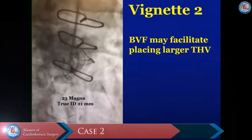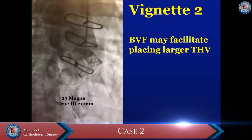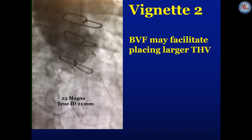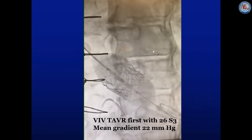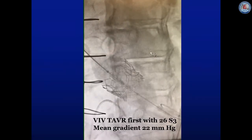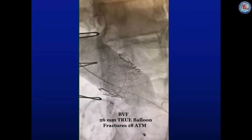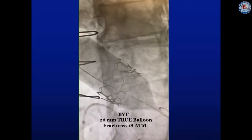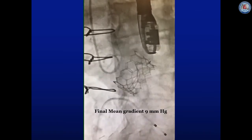Our second vignette illustrates how BVF may facilitate placing a more appropriately sized and optimally expanded transcatheter valve. Here is a 23 mm Magna with a true ID of 21 mm. The valve-in-valve app would recommend a 23 mm S3 or a 26 mm Evolute R. We selected a 26 mm S3, implanted at zero depth, with a mean gradient of 22 mmHg — in the PPM range. We then selected a 26 mm TRUE balloon, right-sized to the 26 mm S3, and performed BVF with fracture at 18 atmospheres. Final mean gradient was 9 mmHg.